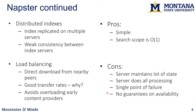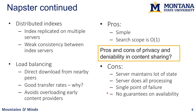The pros: this was a simple mechanism that worked really well. Search scope was easy — just contact the server and get your answer. The cons: the servers had to maintain a fair amount of state, did all the processing, and ended up being the single point of failure, which made it easy to bring Napster down. A lot of people got in trouble — not just for hosting Napster but for downloading — because you could find out what people had by querying the content server, which gave you the IPs of all the people that had that file, putting them in legal jeopardy.